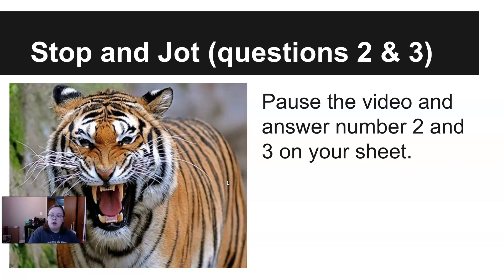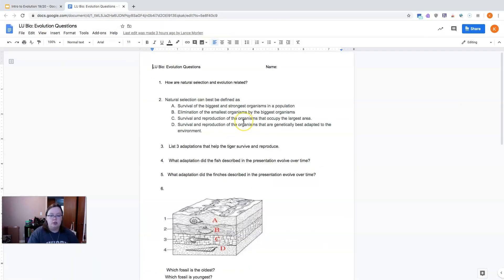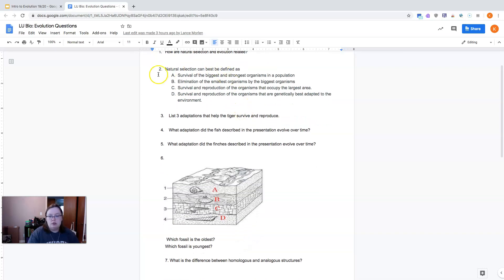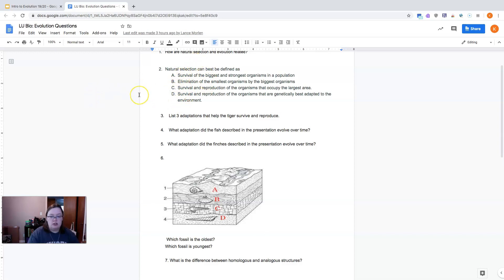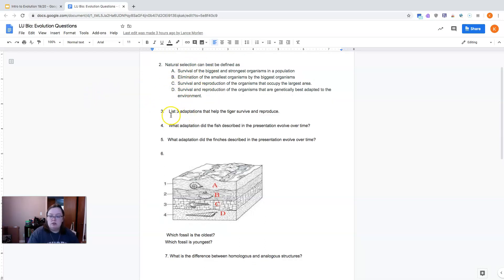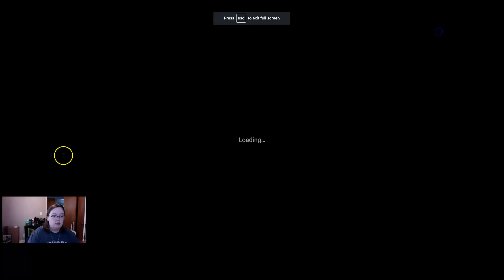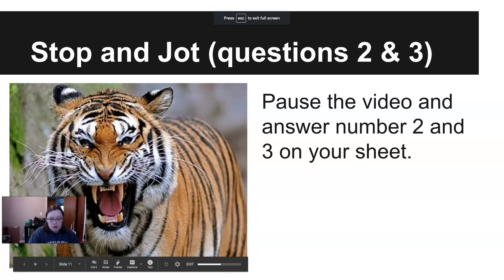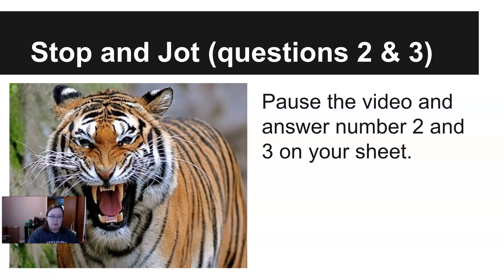At this point, you're going to pause and answer questions two and three on your document. Question two asks: Natural selection is best defined as which of the following? Question three: List three adaptations that help the tiger survive and reproduce. Looking at this tiger, what are three traits or adaptations that make it more likely to survive and therefore reproduce? Go ahead and pause and answer your questions.